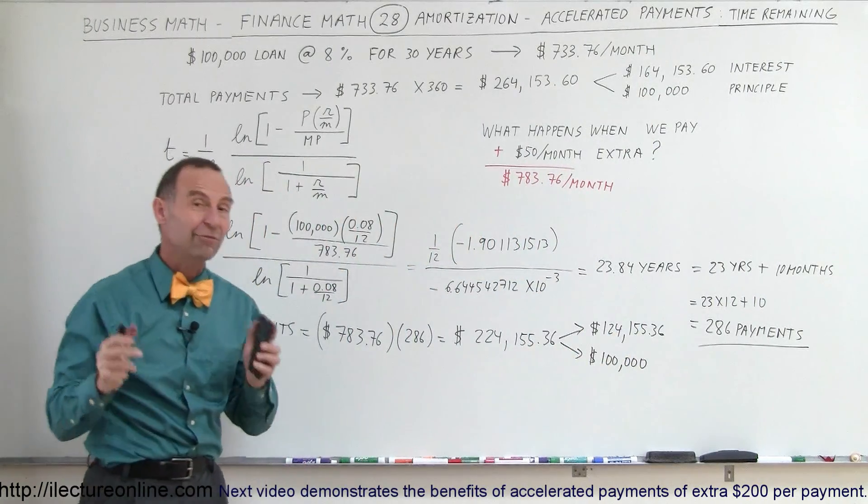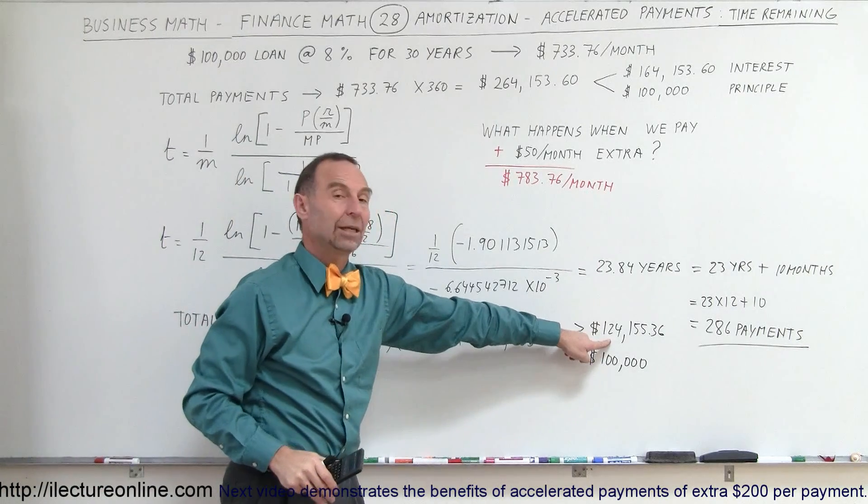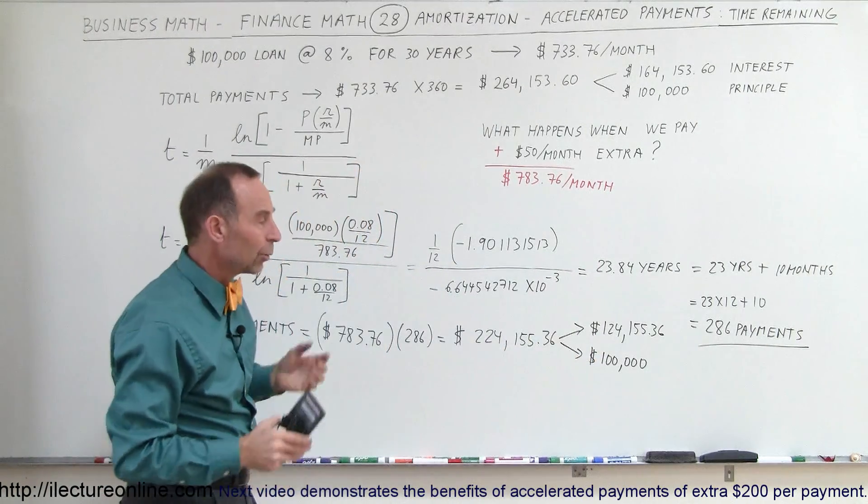Just notice, by just paying $50 per month more, we will have saved a total of $40,000 over the life of the loan. That will cost us less.